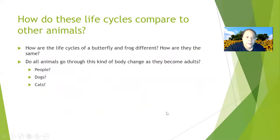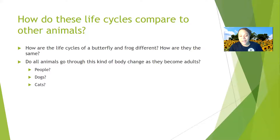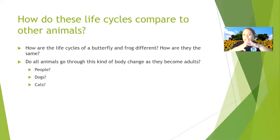How do these life cycles compare to other animals? How are the life cycles of a butterfly and a frog different, and how are they the same? Well, they look totally different — a butterfly looks nothing like a frog — but what they have in common is that both of their life cycles involve physically changing form. They look nothing like how they started out.